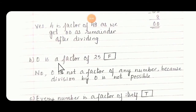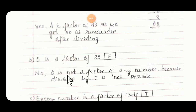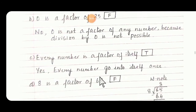Question B: 0 is a factor of 25 — False. No. 0 is not a factor of any number because division by 0 is not possible.